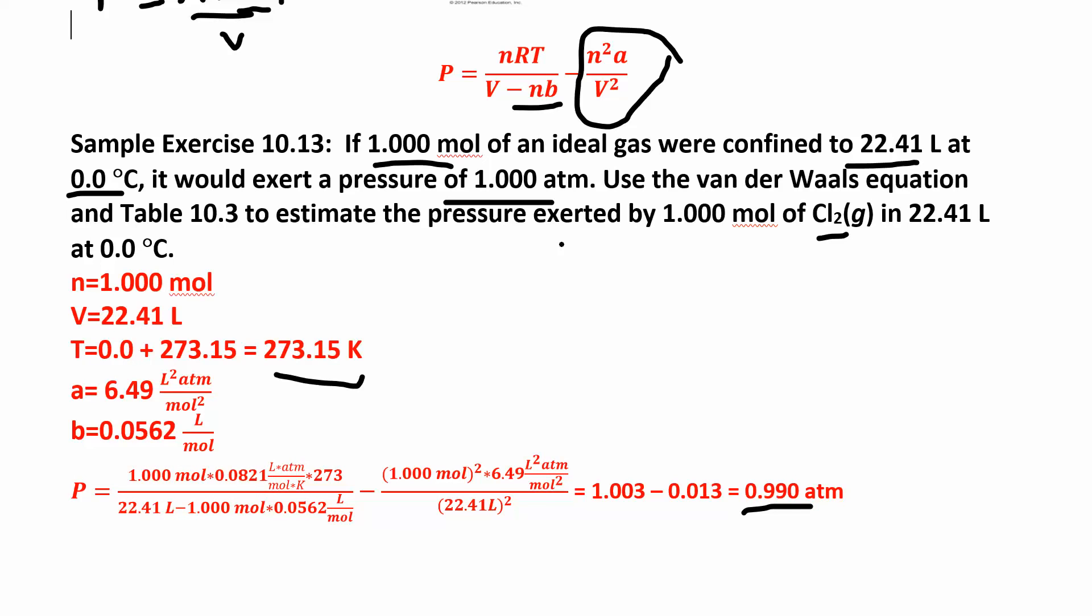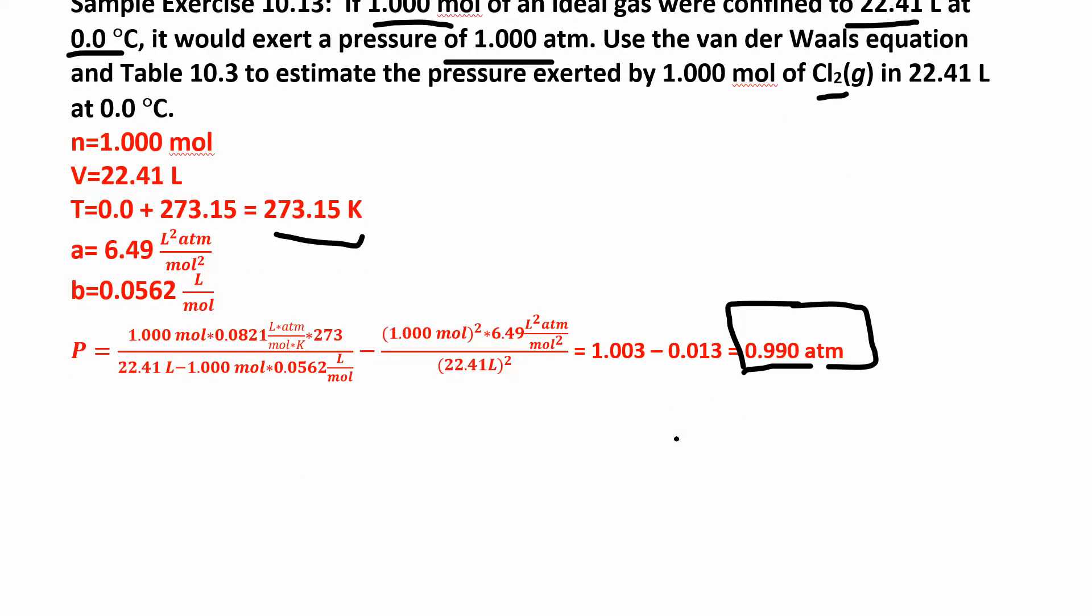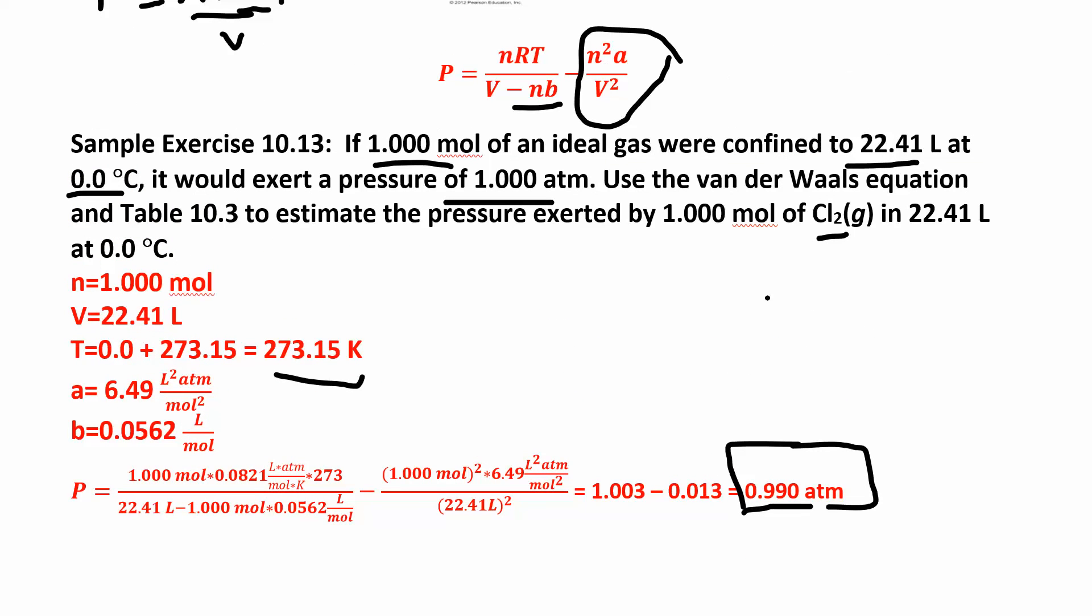If an ideal gas had a pressure of one, then this is what the real gas would look like. It's just a little bit different. You're just correcting the real pressure using the real gas law instead of the ideal gas law. It's just a correction to the ideal gas law.